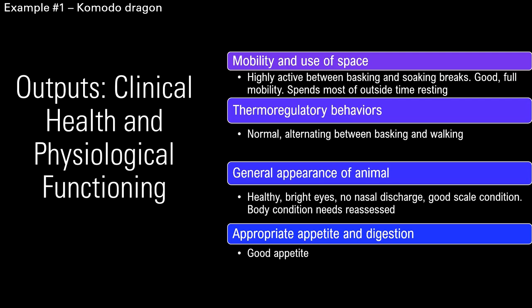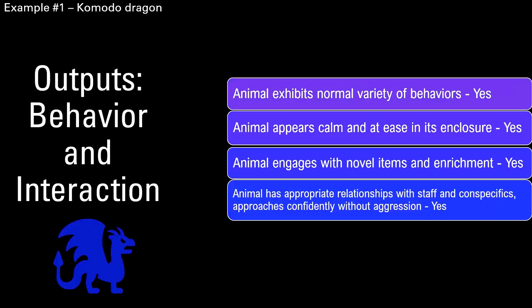In this example, the animal has a normal activity budget, healthy appearance, no current medical conditions, good appetite, and good digestion. Its poop is normal in frequency and consistency — in varanids, that usually means a mess. Even in healthy animals, they tend to poop as hard as they can, which is always exciting when you have them out for an encounter.